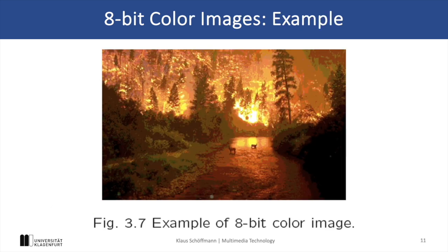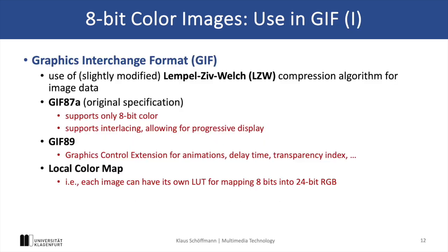A typical image format using such a color table is GIF, which not only uses a color lookup table but also reduces storage requirements further by using a compression algorithm — in particular the LZW algorithm — which finds repeating sequences and uses smaller code words for these sequences, resulting in far fewer bits in the stored image.